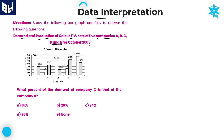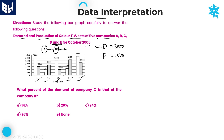The information is very easy to understand — it covers demand and production of color TV sets of five different companies A, B, C, D, E. The white bar indicates demand and the shaded bar indicates production. For example, for company A, demand is 3000 but production is only 1500.